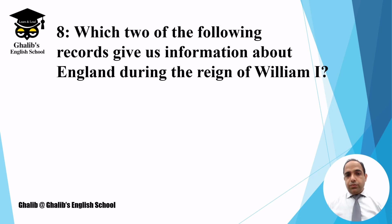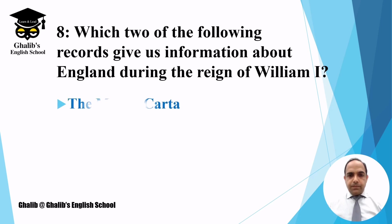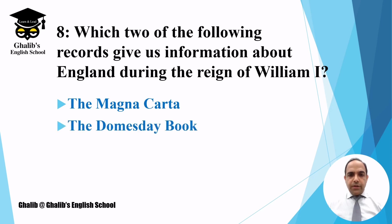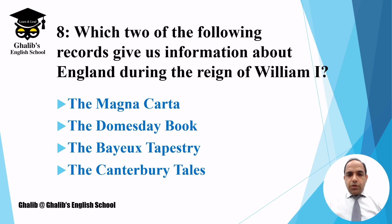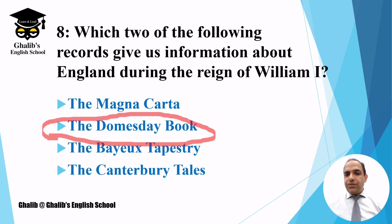Question number eight asks you to choose two options: which two of the following records give us information about England during the reign of William I? William I was a king of England who was from France. The options are Magna Carta, the Domesday Book, the Bayeux Tapestry, or the Canterbury Tales. The two correct answers are the Domesday Book — which listed the names of people, animals, and lands — and the Bayeux Tapestry.